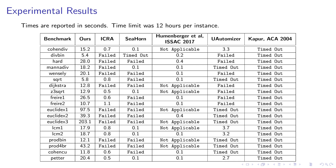Here are our experimental results over benchmarks taken from the literature. We ran our algorithm, several previous sound-but-incomplete approaches, and the only previous approach providing a completeness guarantee. The complete approach always times out — it's not applicable to any benchmark, not even those with fewer than 10 lines of code, so completeness there comes at a very hefty price. The sound-but-incomplete approaches are super fast but can't find all invariants — there are many cases where they fail to synthesize an existing polynomial inductive invariant. In contrast, our approach works on all benchmarks, with runtime not as good as the incomplete approaches but with a completeness guarantee at a much lower price.